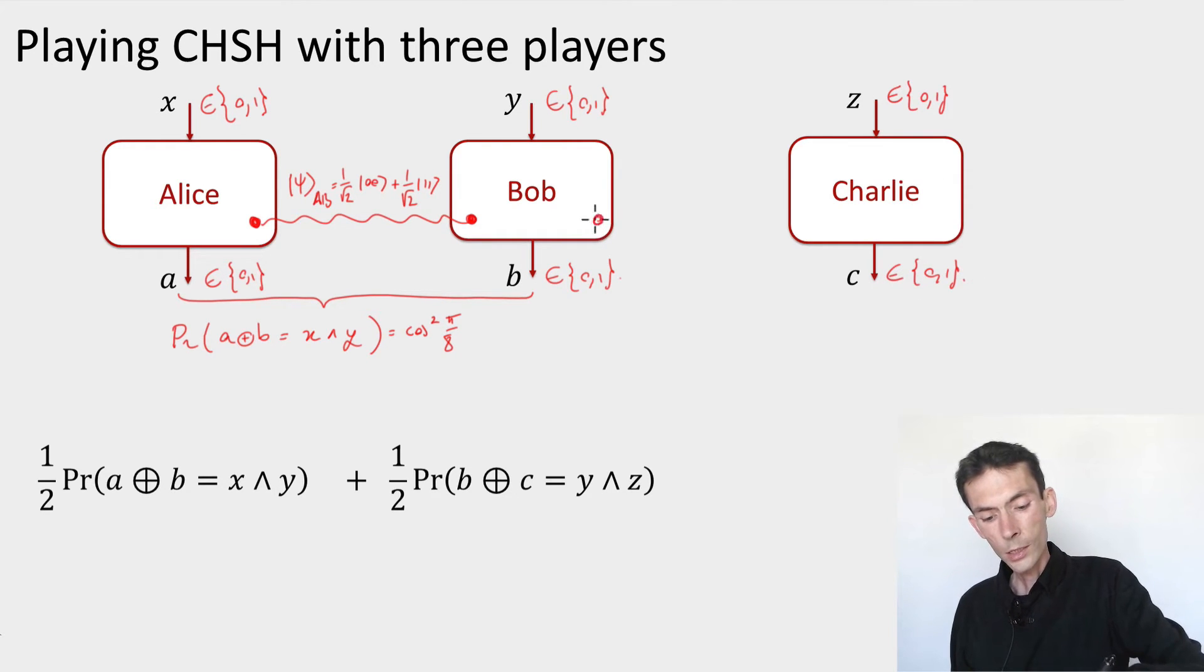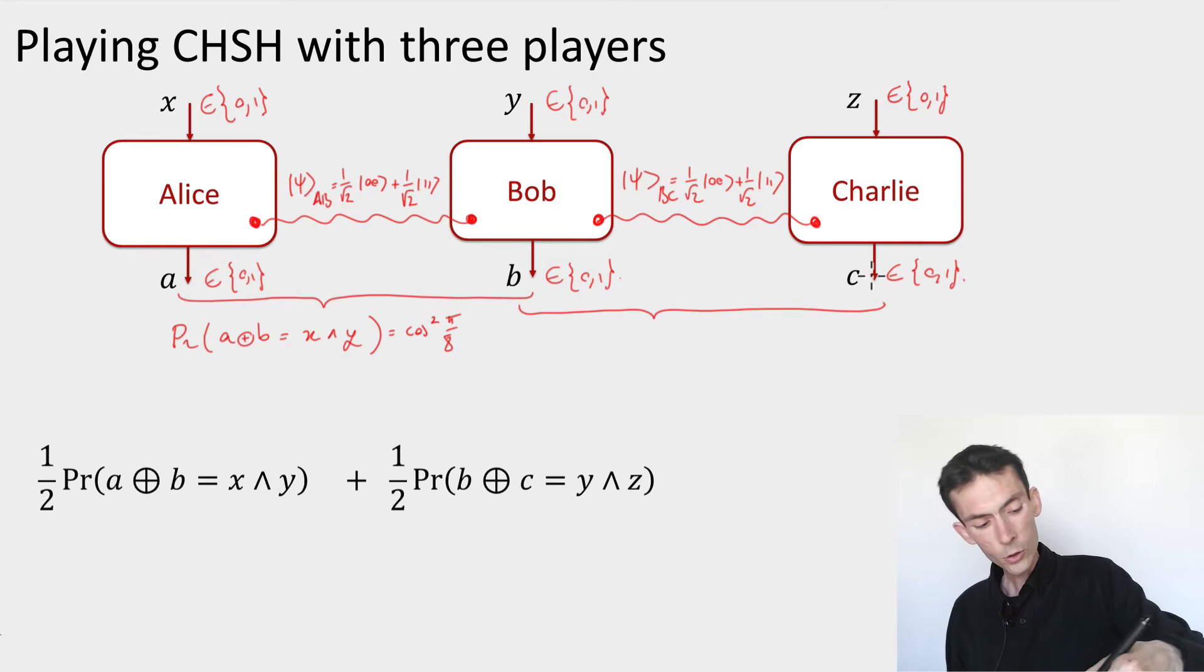And again using the same strategy, if Bob and Charlie were to share maximally entangled state psi_bc, then they would be able to produce correlations that satisfy the CHSH constraint, that the parity of b and c is equal to the and of y and z with probability cos squared